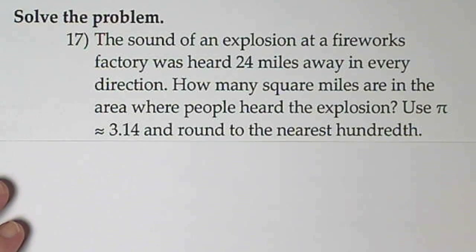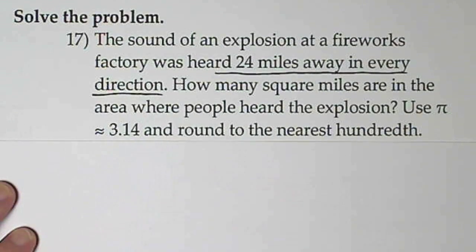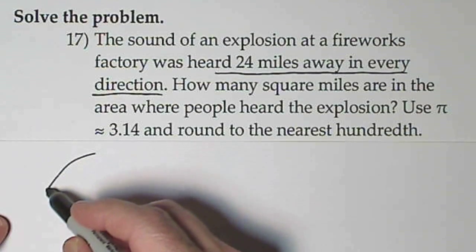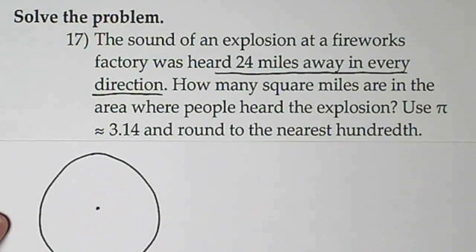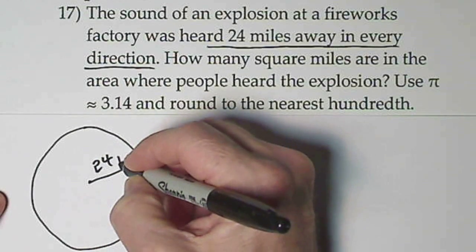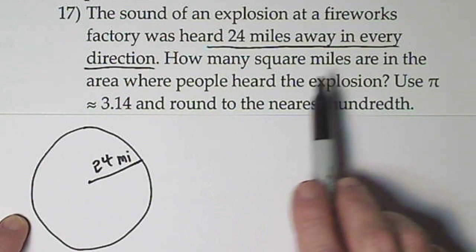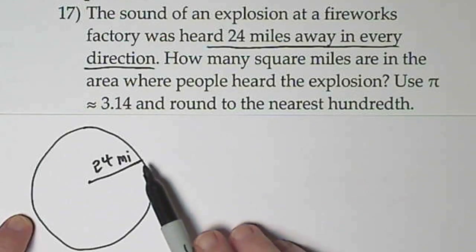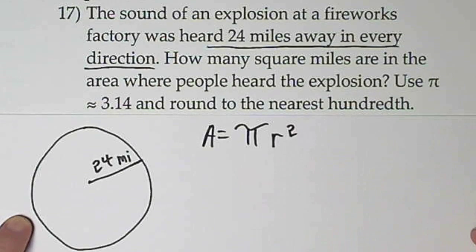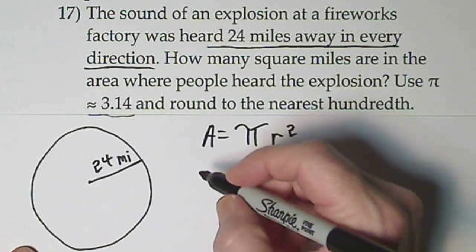Okay, reading this problem: the sound was heard 24 miles in every direction. So if we have our factory sitting in the middle, we need to be able to go out 24 miles in every direction. That means our radius from the center to the side would be 24 miles. How many square miles are in the area where people heard the explosion? To find the area of this circle we'll use the formula π r².